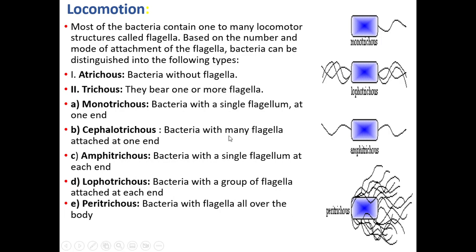Lophotrichous bacteria have a group of flagella at both ends. This is a lophotrichous bacterium. Peritrichous bacteria have flagella all over the body of the bacteria. So these are different kinds of bacteria on the basis of the number and mode of attachment of flagella.